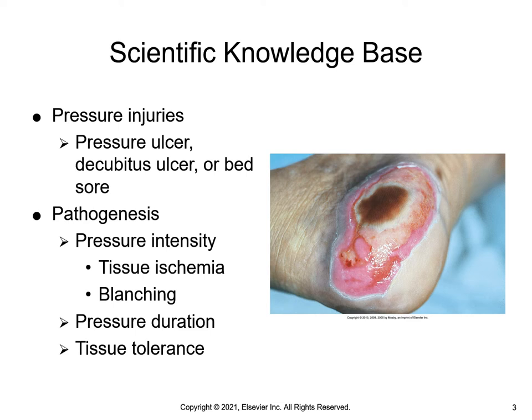Pressure injury is a localized damage to the skin and underlying soft tissue, routinely over a bony prominence or related to a medical device or another type of device. The injury can present as intact skin, a blister, or an open ulcer, and it may be painful. Pressure is the major cause of injury. Tissue receives oxygen, nutrients, and eliminates metabolic waste through the blood system. Pressure or other factors that interfere with blood flow also interfere with cellular metabolism and the functioning or life of the cells.